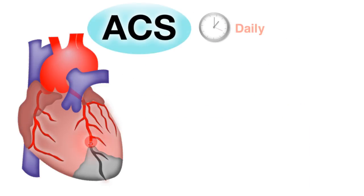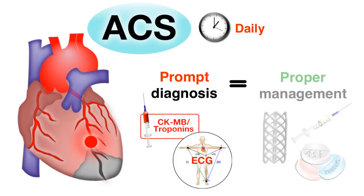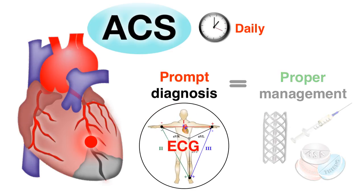Acute coronary syndromes are encountered on a daily basis in the emergency room. Prompt diagnosis of ischemia on the EKG may lead to proper management and may actually save lives. We will really focus on understanding the changes on EKG in patients presenting with ACS. We will not be discussing management in this series of videos.